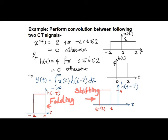To start with, we change the index of x of t and h of t to tau respectively. Followed by that, we perform folding operation on the h of t function that becomes h of minus tau. So h of minus tau now is the folded version of the given h of t function.